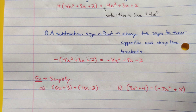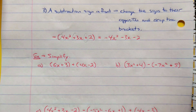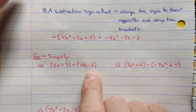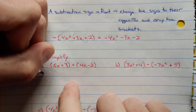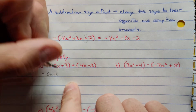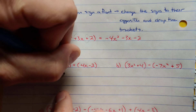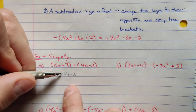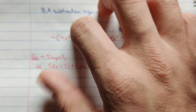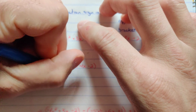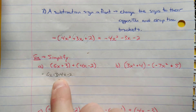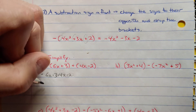Example: 6x squared plus 3 in brackets, plus 4x minus 2 in brackets. The first brackets have nothing in front, so just write 6x squared plus 3. The second brackets have a plus sign in front, so rewrite positive 4x minus 2. Make sure to include the plus sign between terms so it doesn't read as '34' — it's a positive 4x.